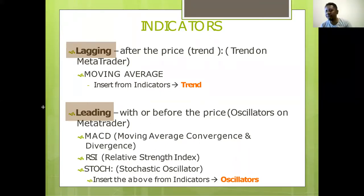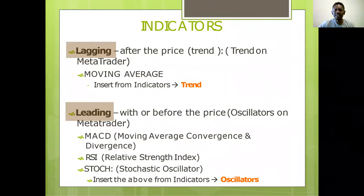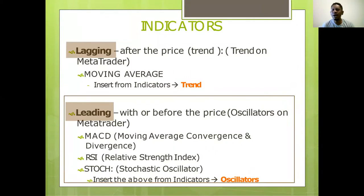The most sensitive indicators will show an early indication of a downtrend, uptrend, or reversal. The less sensitive ones will show an indication later. Within the leading indicators family, some are more forward than others — some are laid back, some are more forward. They all belong to the same family, just with different levels of responsiveness.